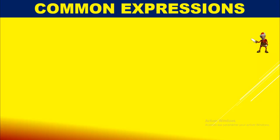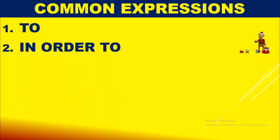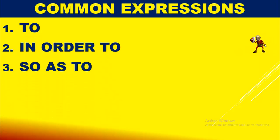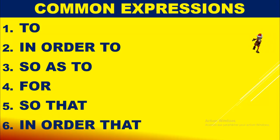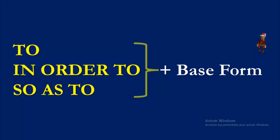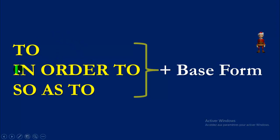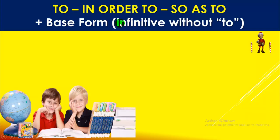Here are expressions we are going to use today to express purpose in English: 'to', 'in order to', 'so as to', 'for', 'so that'. 'To', 'in order to', and 'so as to' are interchangeable, and they are followed by the base form — that is, the infinitive without 'to'.